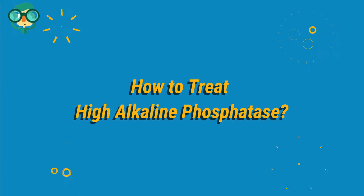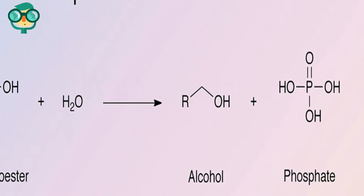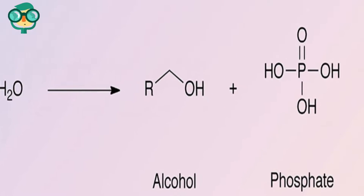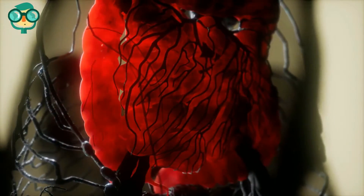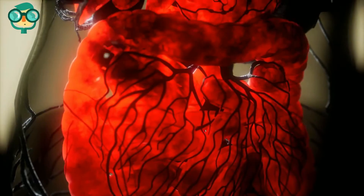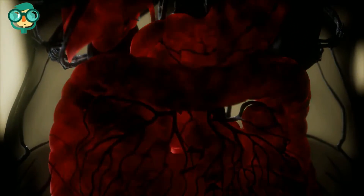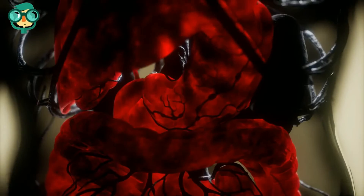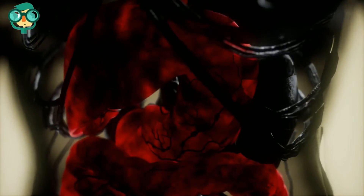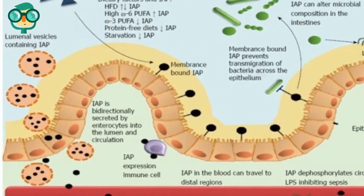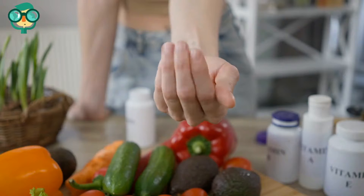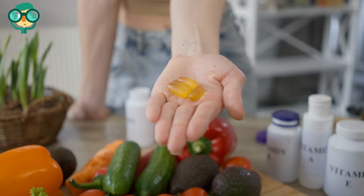Today we will talk about how to treat high alkaline phosphatase. Alkaline phosphatase, or ALP, is an enzyme naturally found in your liver, digestive system, kidney, and bones. A high ALP may indicate health conditions including liver damage, liver disease, bone disease, or a blocked bile duct. In most instances, high ALP is a temporary and non-serious concern. Children and teenagers in particular may have a higher ALP than adults. ALP rates can be lowered through a combination of medication, dietary changes, and lifestyle modifications.